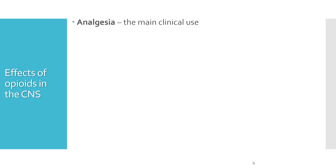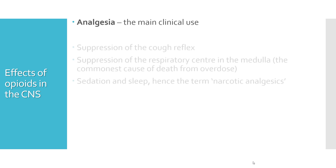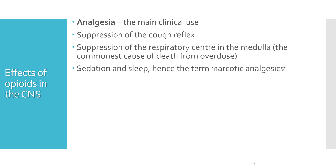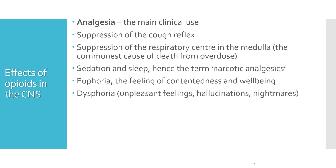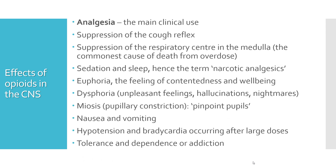Effects of opioids on the central nervous system include analgesia as the main effect, suppression of the cough reflex, suppression of the respiratory center in the medulla — which is the commonest cause of death from opioid overdose — sedation and sleep (hence they are called narcotic analgesics), euphoria, dysphoria with unpleasant feelings, hallucinations and nightmares, miosis (pupillary constriction — pinpoint pupils in overdose), nausea and vomiting, hypotension, bradycardia, tolerance, dependence, and addiction.